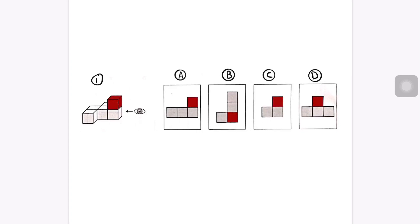For question one, this shape has two layers — there's one layer here and a second layer there. When looking at it in a 2D perspective, we want to see those two layers. So we're going to eliminate any choice that doesn't have two layers. We eliminate B because B has three layers — layer one, layer two, and layer three. So we're left with A, C, and D.